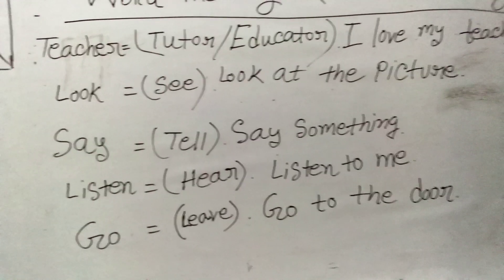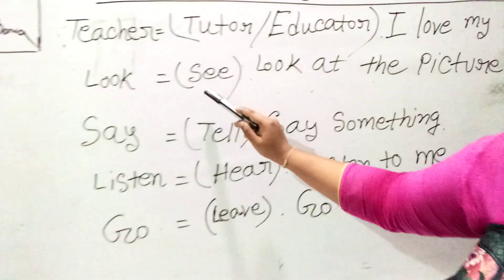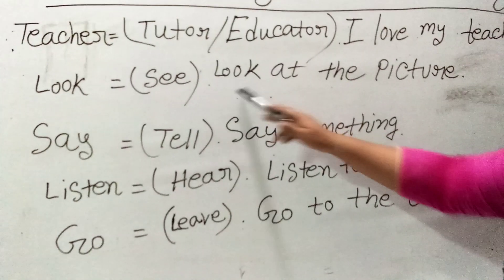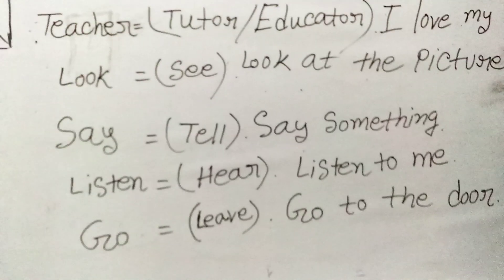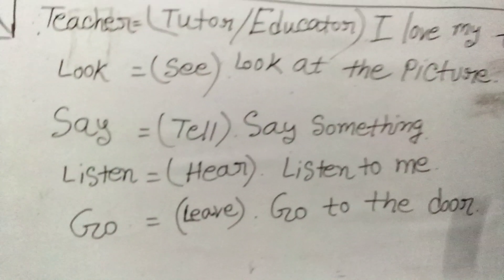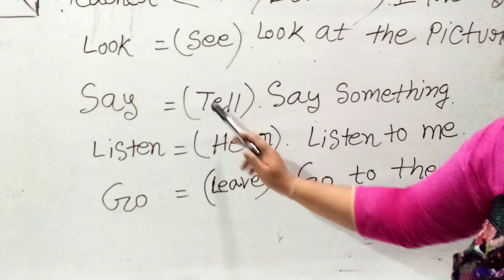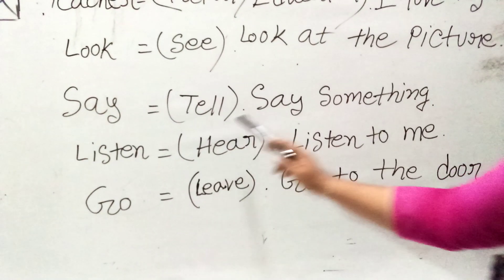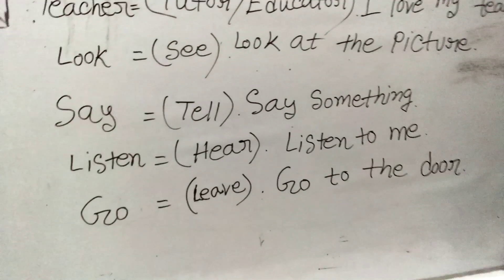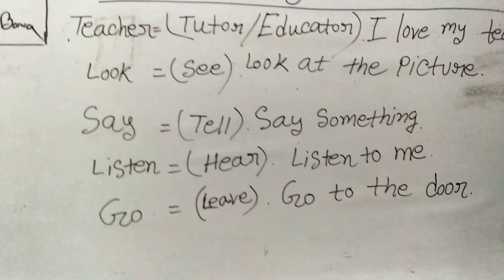The second word is 'look.' Look means to see something. You can make a sentence like: 'Look at the picture,' 'Look at me,' 'Look at the sky,' or 'Look at the board.' The third word is 'say.' Say means to tell — to tell anything. A sentence with this word: 'Say something,' 'Say the name of the flowers,' or 'Say the name of the fruits.'